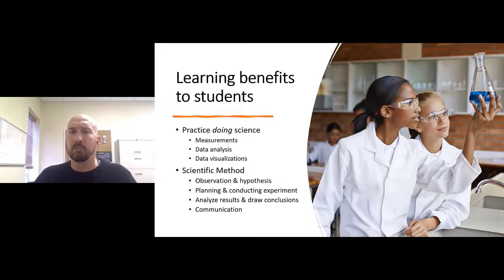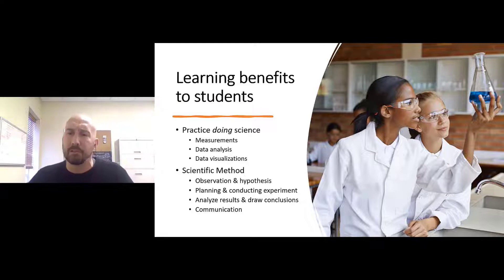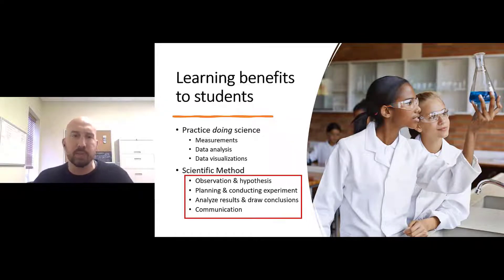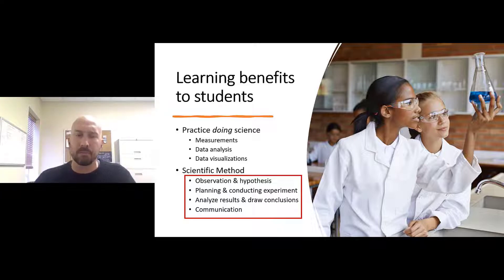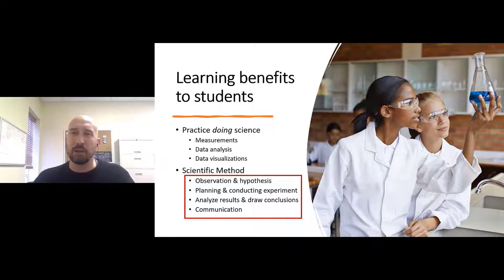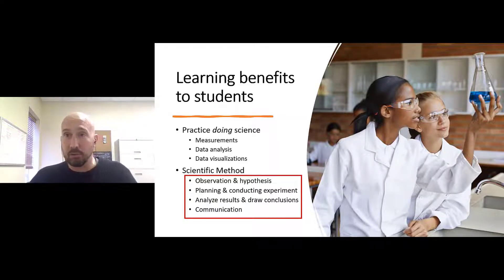It might be helpful to consider experimentation within the context of the scientific method and to consider tailoring your activities to target only specific steps. I have summarized these as: making observations and formulating a hypothesis; planning and conducting an experiment that will test the hypothesis; analyzing results and drawing evidence-based conclusions; and finally communicating the results and the experiment to others — summarized here in four broad steps.